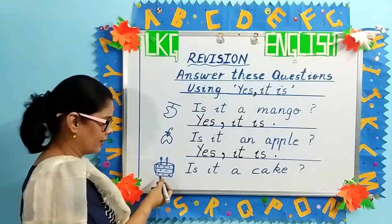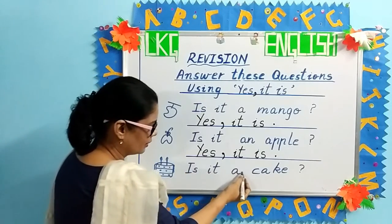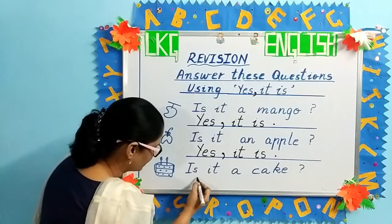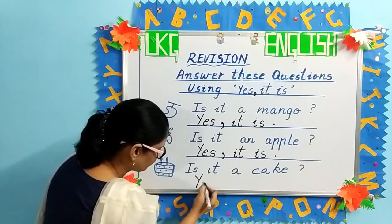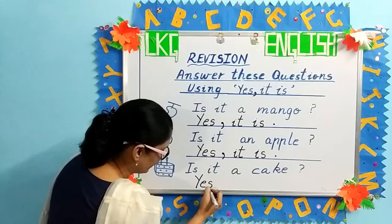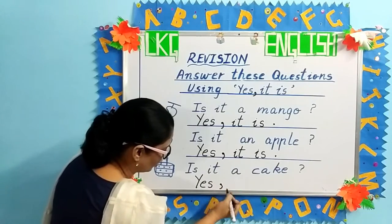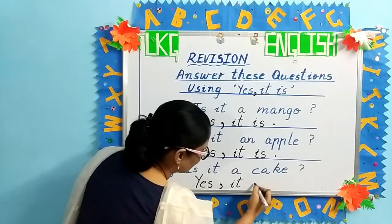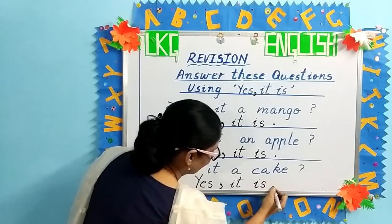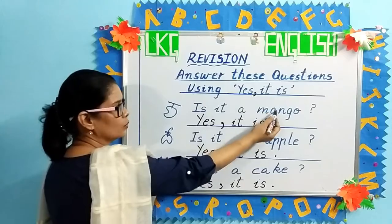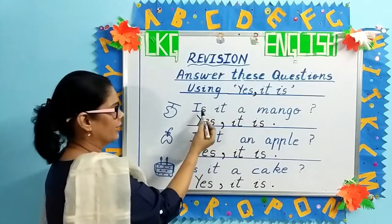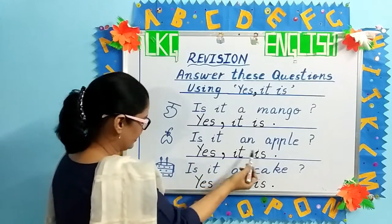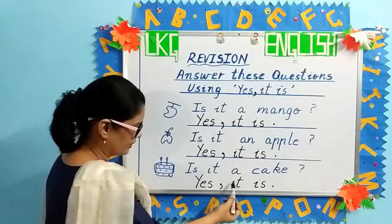Again, your answer will be capital Y, small e, S — yes. Make a dot, make a tail, comma — then I, T — it — I, S — is. You will look at the picture; the picture is the same as the word, so you will write 'yes, it is.' Is it a mango? Yes, it is. Is it an apple? Yes, it is. Is it a cake? Yes, it is.